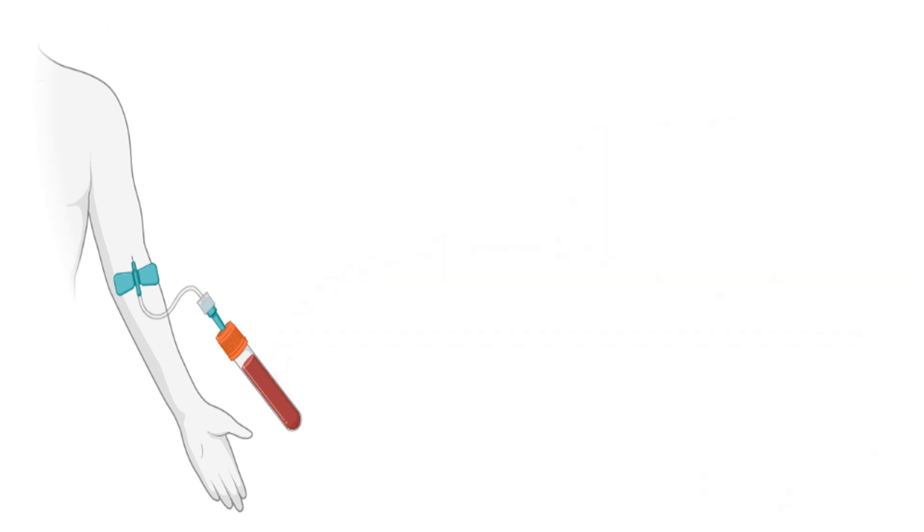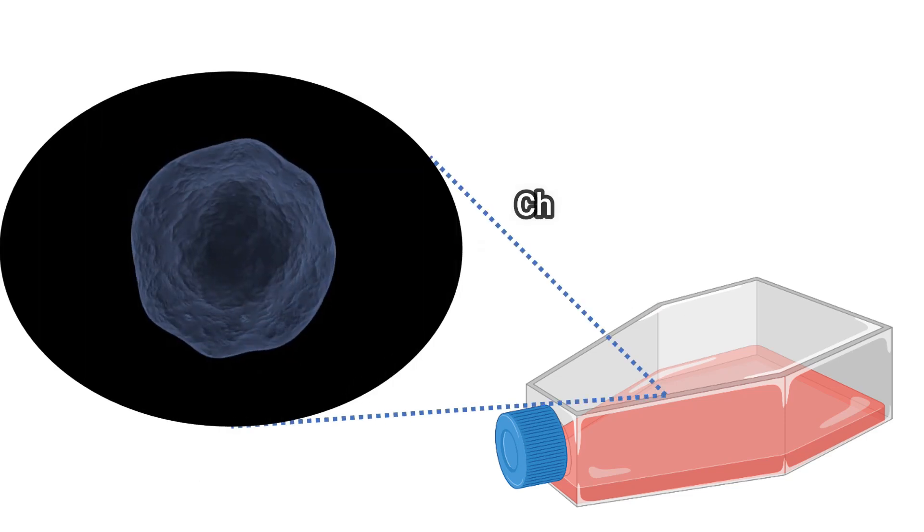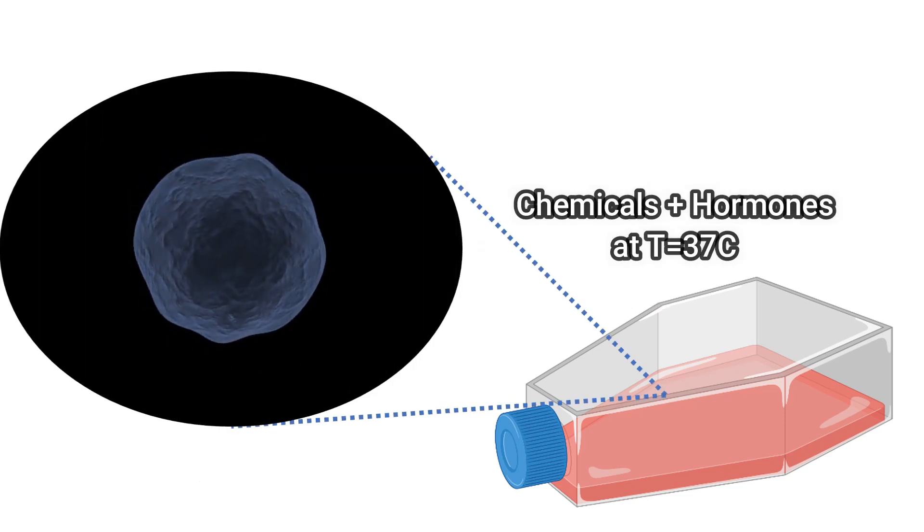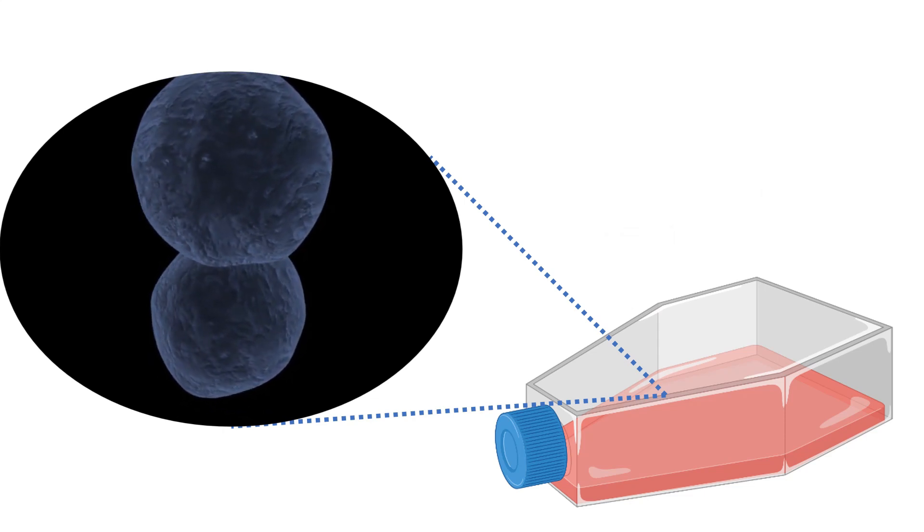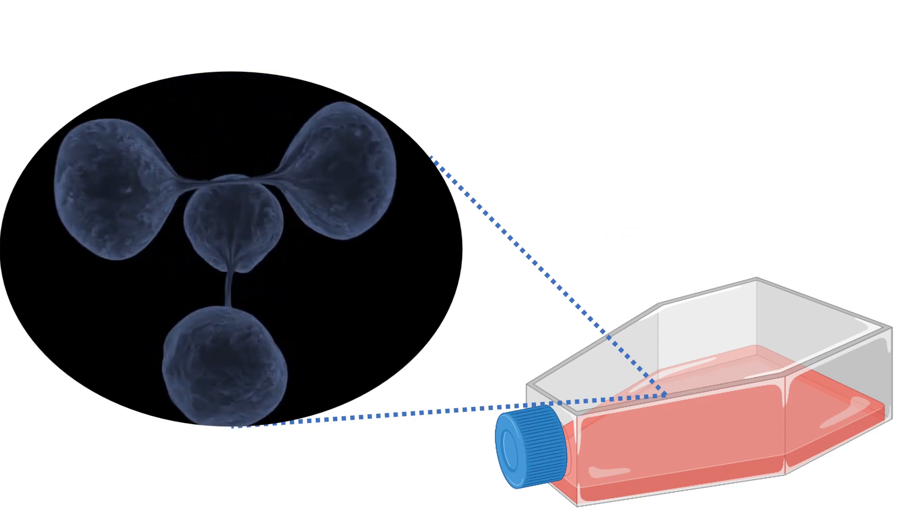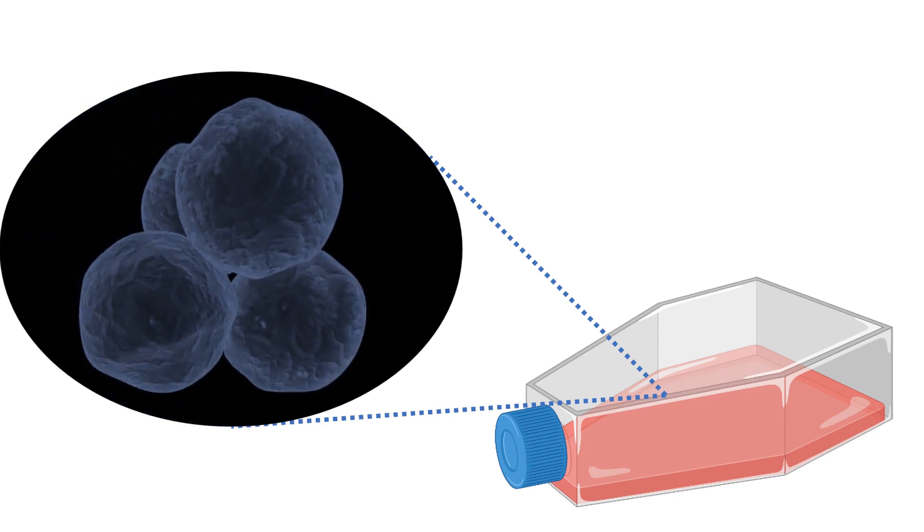The third step is growing cells. In order to have enough cells to analyze, the dividing cells are grown in a special medium at 37 degrees Celsius. This process of culturing can take three to four days.